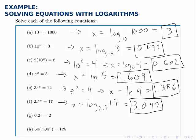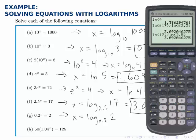For part g, I do the same thing, rewriting this as a logarithmic equation, x equals log base 0.2 of 2. And on the calculator, I can use the change of base formula, log 2 divided by log 0.2. And I find that x is negative 0.431.